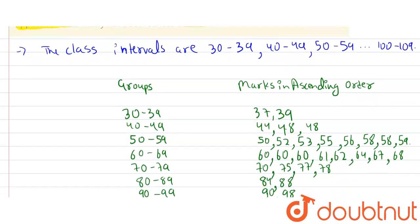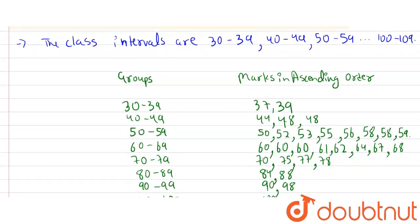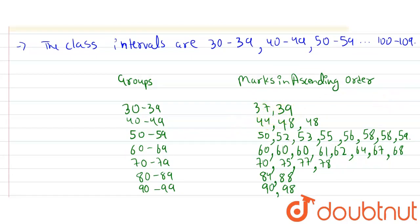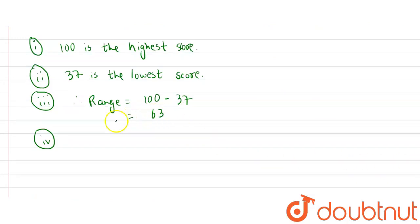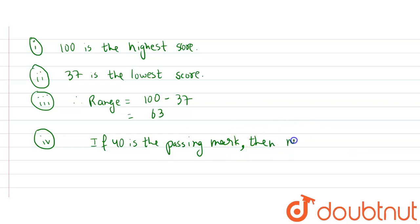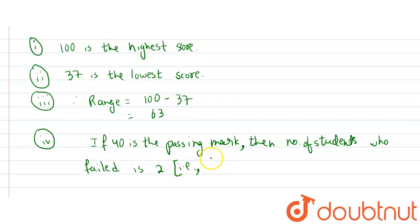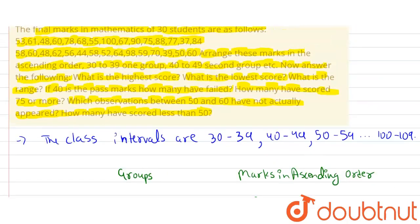The fourth part: if 40 is the passing marks, how many have failed? We can see that there are only two marks less than 40. So the number of students who failed is 2 — those who scored 37 and 39.